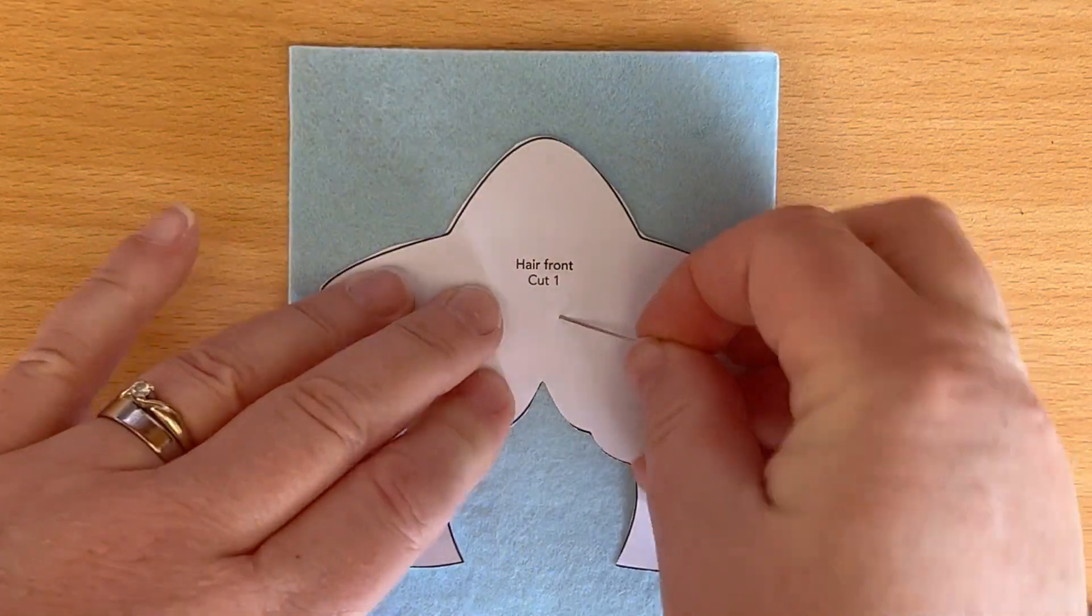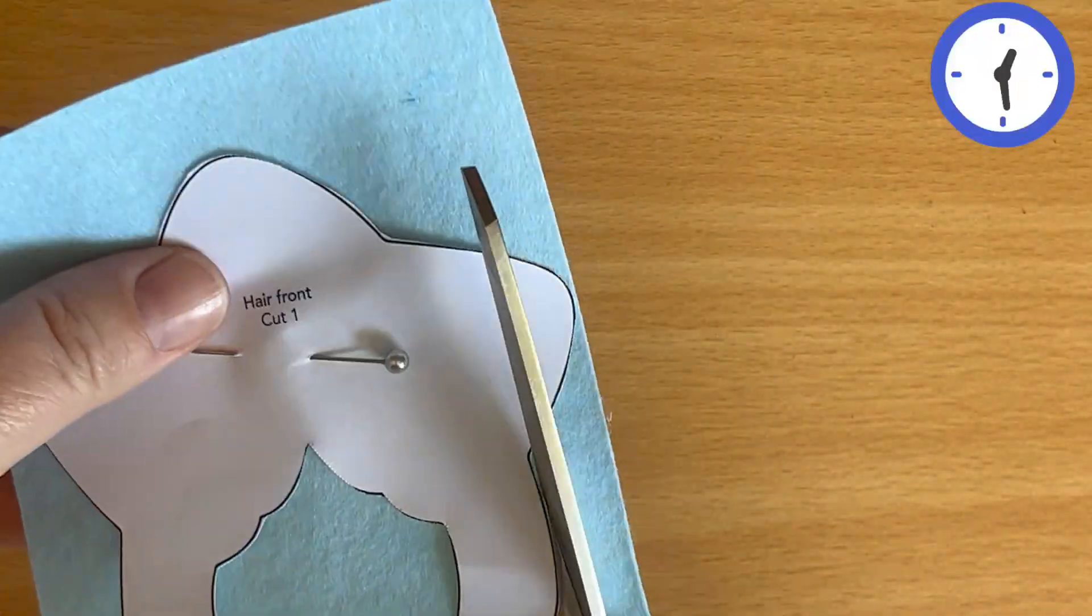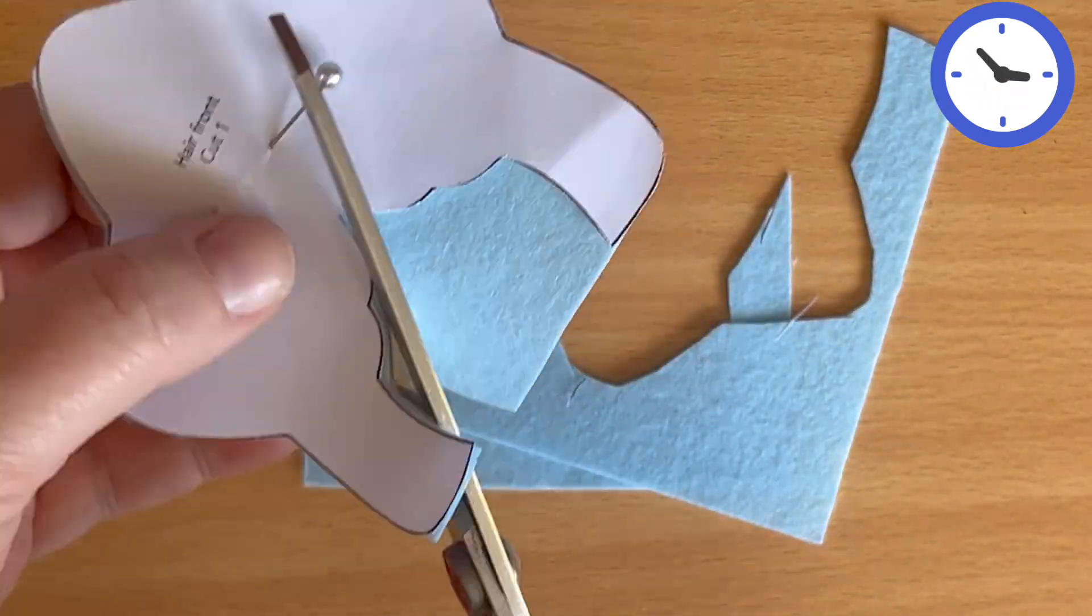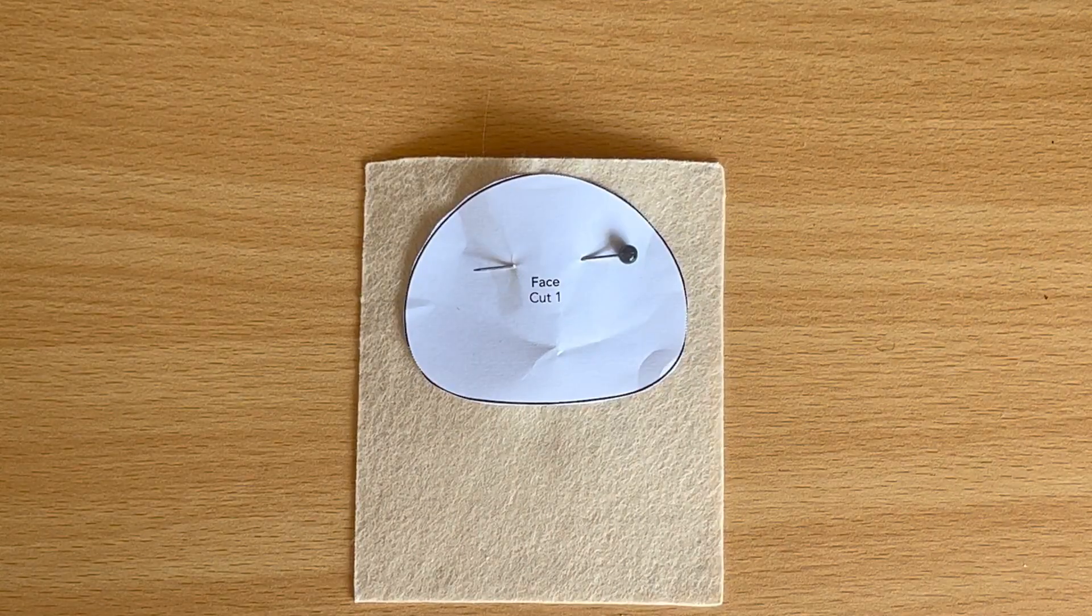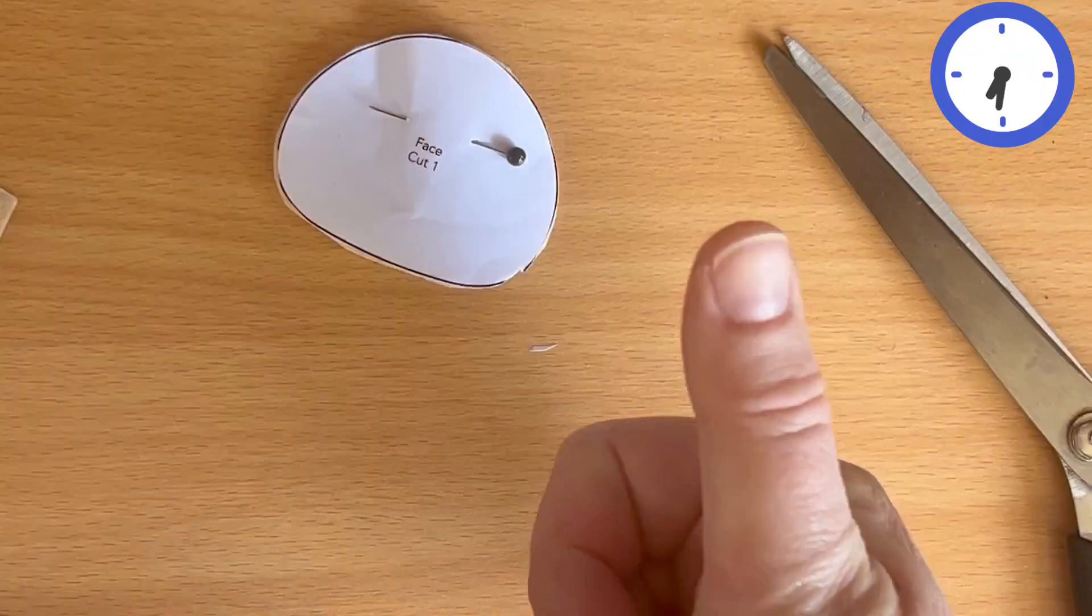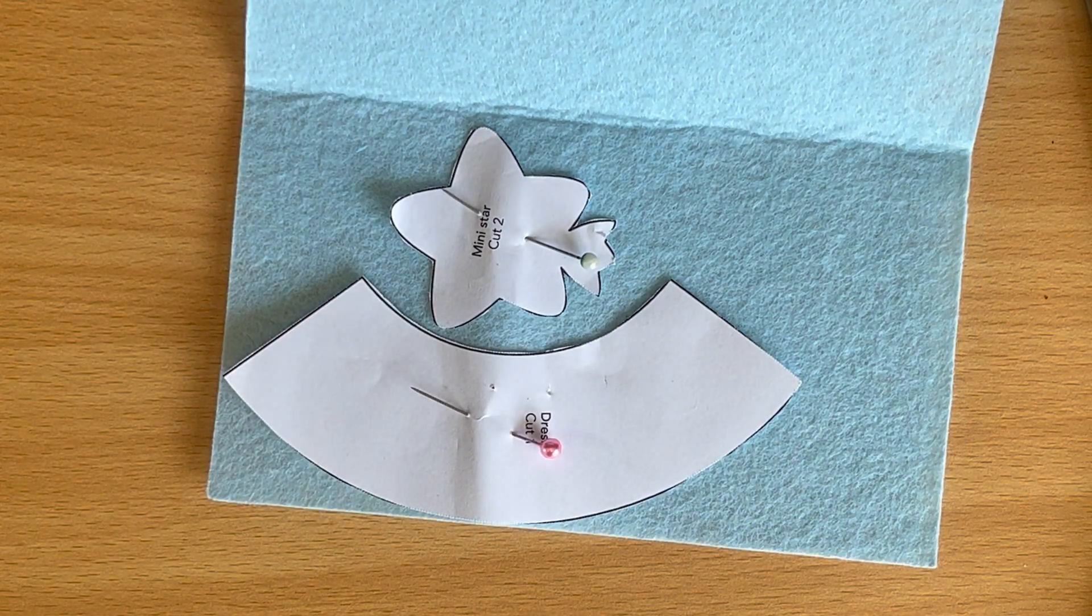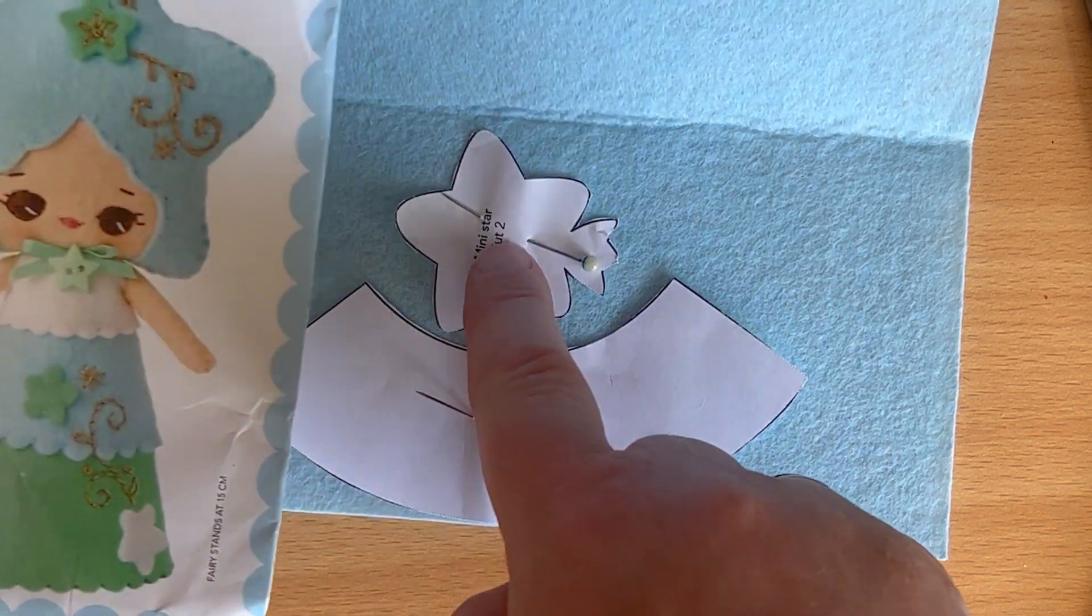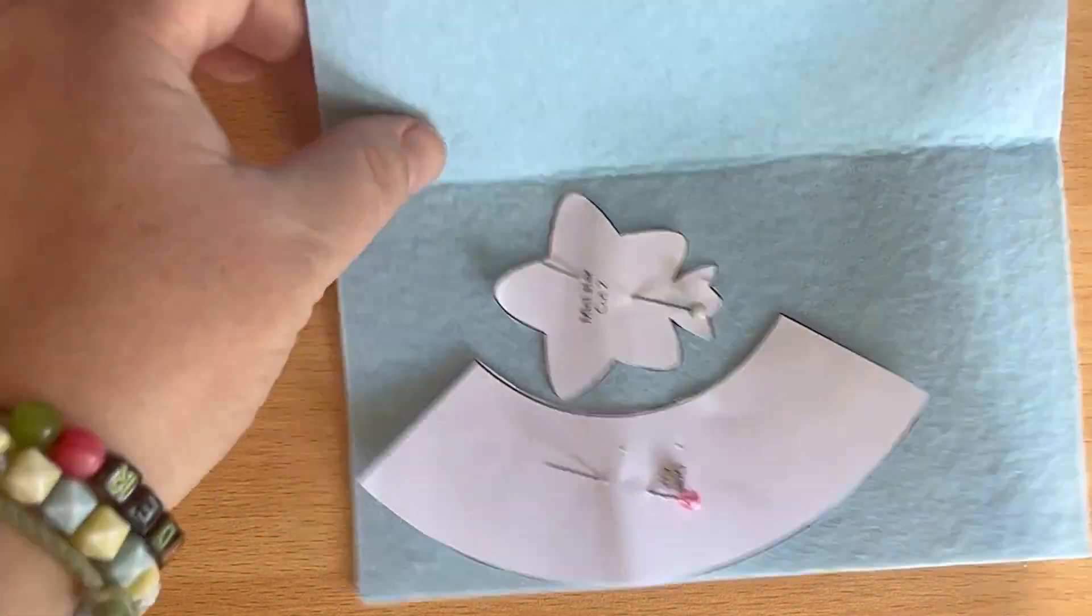For the hair we're going to use the light blue felt and just pin that on and then cut around it. Next is the face using this light sandy color and cut out. Next we're using one of the skirt pieces and the star, also in light blue felt as seen in the middle part of the picture, so cut those out.